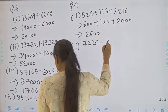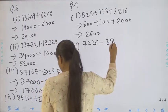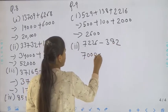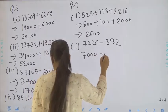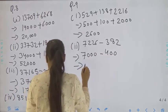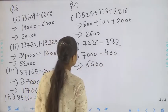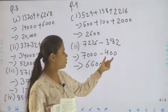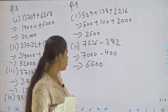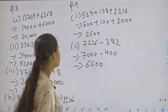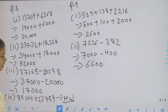Now move to the second part: 7226 minus 382. So 7226 will round off to 7000 and 382, nearest to the hundred, will round off to 400. So 7000 minus 400 it will be 6600. If you want to take a screenshot you can take it.